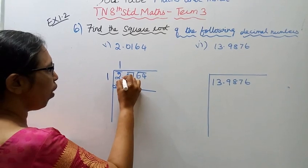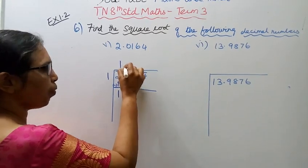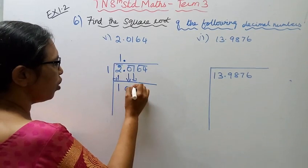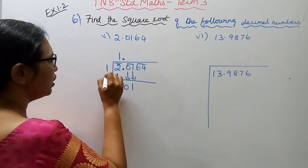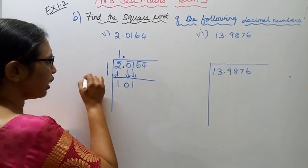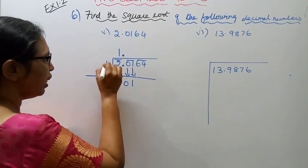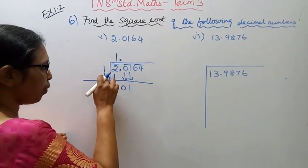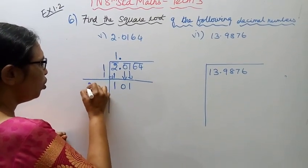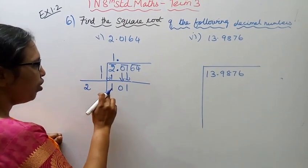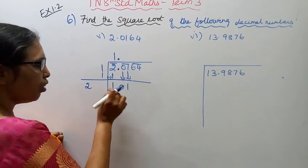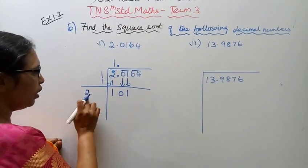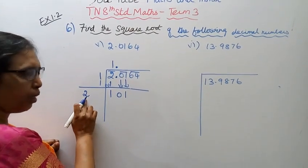Now past the decimal point, bring down 2 numbers: 0 and 1. Add the left-hand side number by the same number. Left-hand side is 1, so 1 plus 1 is 2. Now divide: the first number divided gives 1, and the next number is 9.